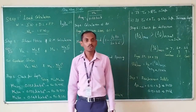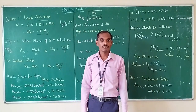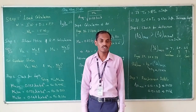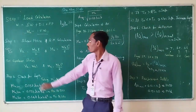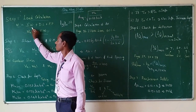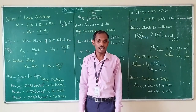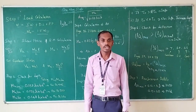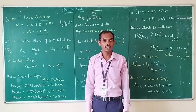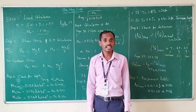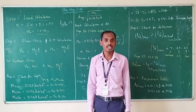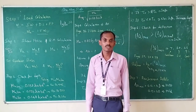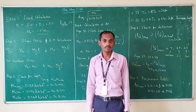We have two types of loads: dead load and live load. To find the total load, we calculate the self-weight of the slab. Self-weight is calculated using the formula B × D × unit weight of concrete, where B is per meter, D is the overall depth of the slab, and the unit weight of concrete (γc) is 25 kN/m³ for reinforced concrete.